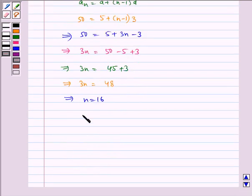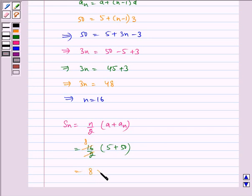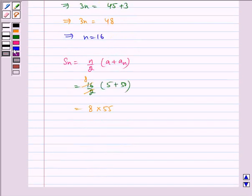Now using this value of n, we will find Sn which is equal to n by 2 multiplied by a plus an, which is equal to 16 by 2, a is equal to 5 plus an is equal to 50, which is equal to 440.